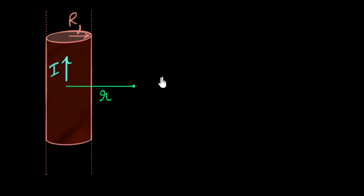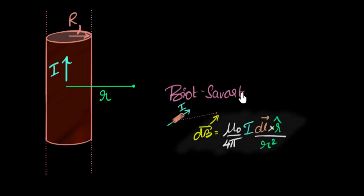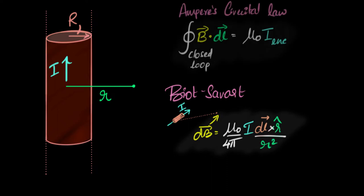Well we have seen two laws that help us calculate magnetic field due to current. One is called the Biot-Savart law and the other one is Ampere's circular law. To use Biot-Savart...